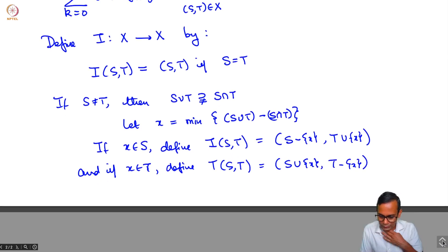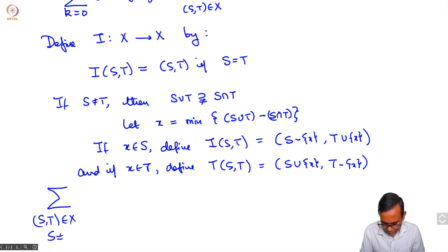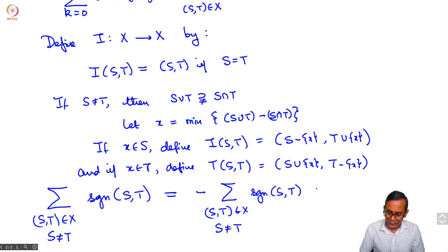This is a sign reversing involution and the fixed points are those pairs s comma t where s is equal to t. What we have is that the sum over s comma t in x such that s is not equal to t of sign of s,t is equal to its own negative because I have defined a sign reversing involution on this set, and hence is equal to 0.